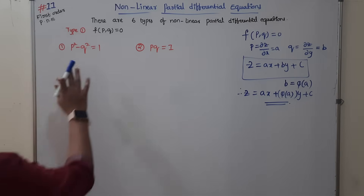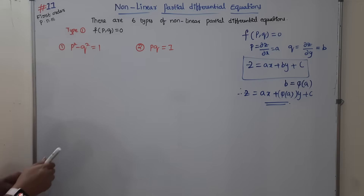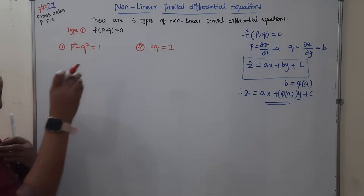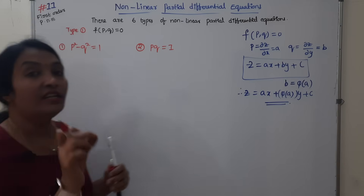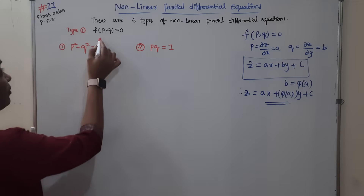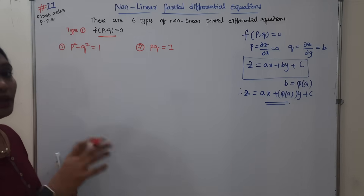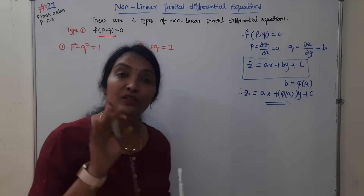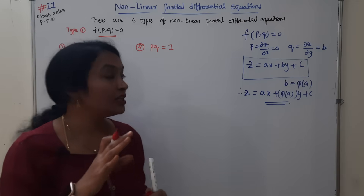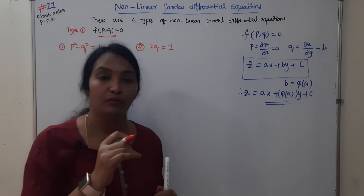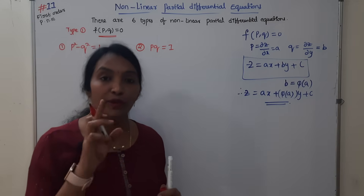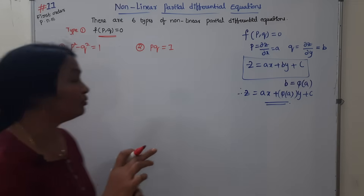Now I have two problems. Very simple, no need to worry. First, observe the equation: if it is of the form f(p, q) = 0, then go for Type 1. After practice, there will be no confusion. Just practice f(p, q) and find the solution.